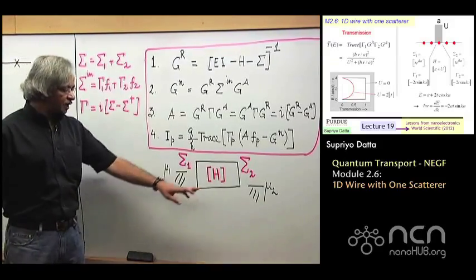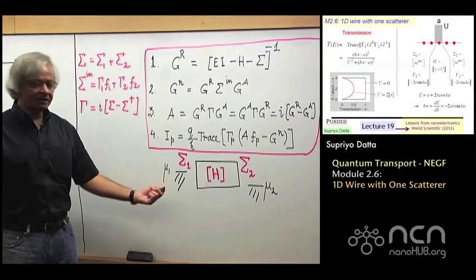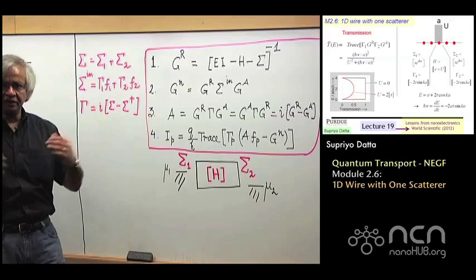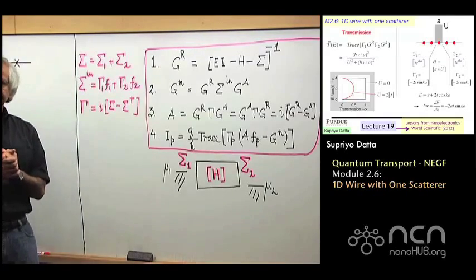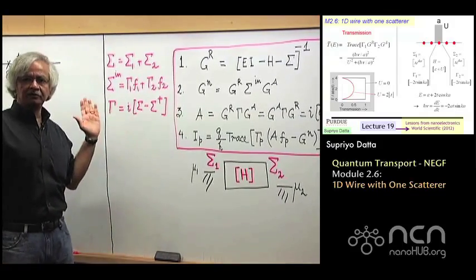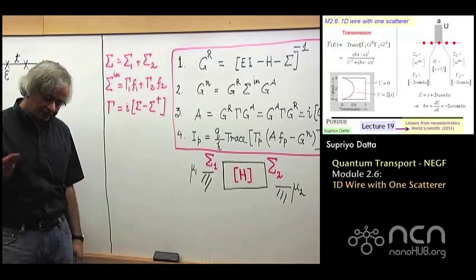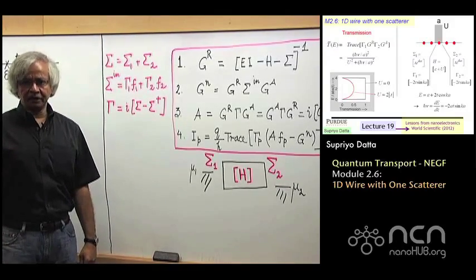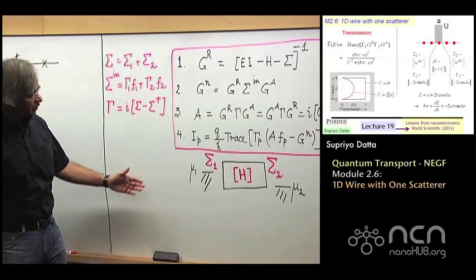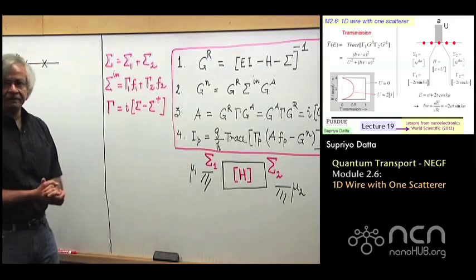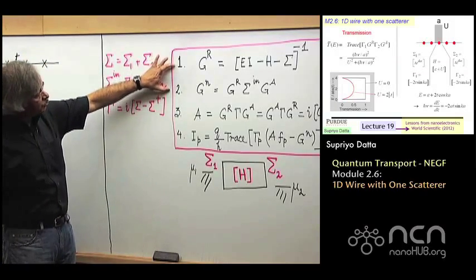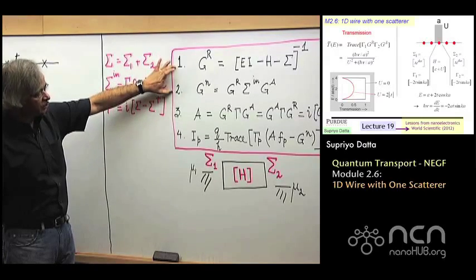The two basic inputs are H from last week, and then you need these sigmas — sigma 1 and sigma 2 — which tell you the connection to the contact. As we work out different problems, today we'll be doing a simple problem, and next week and the following week we'll be doing more. That should give you a feeling for how these sigmas are written down. These two are the basic NEGF equations, 1 and 2.